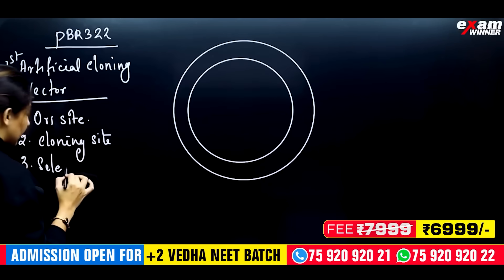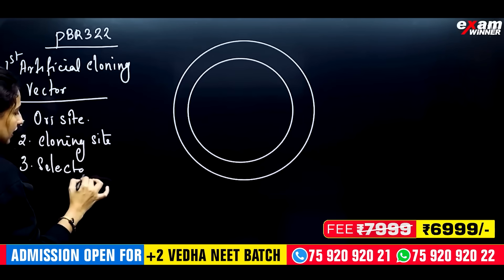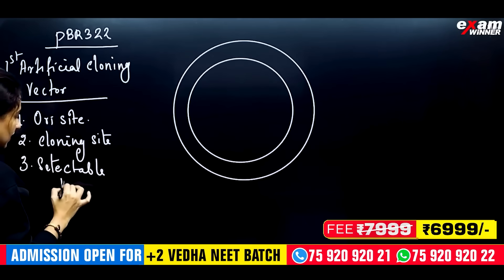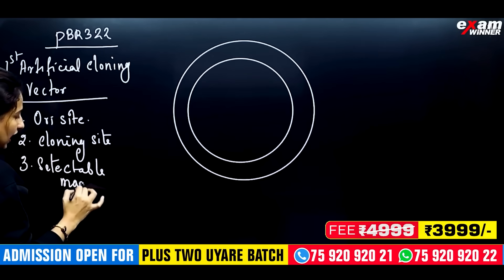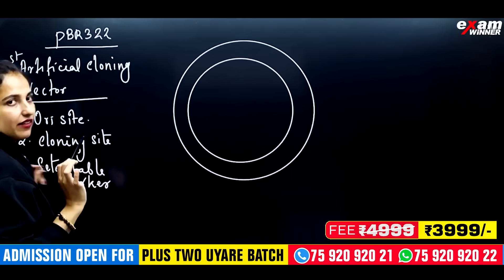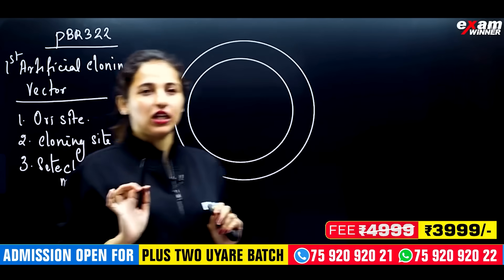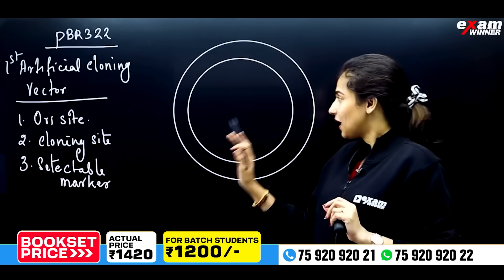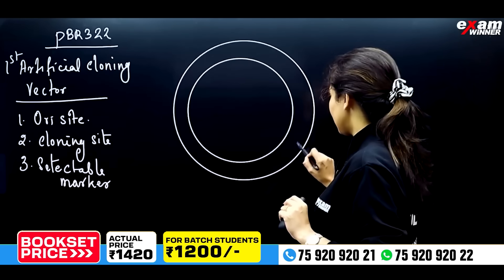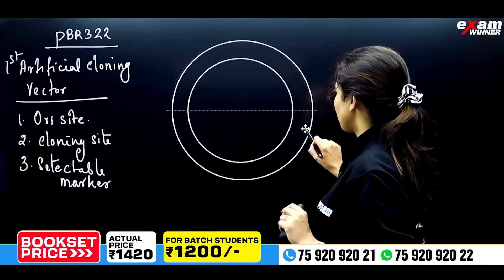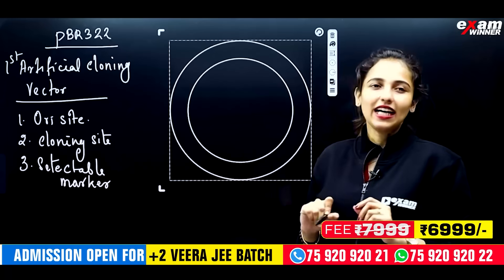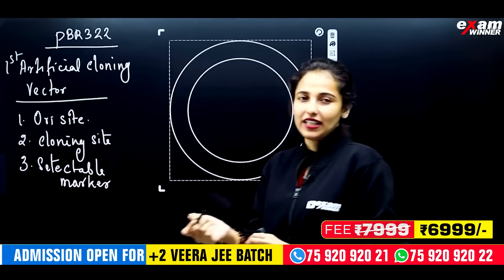This is a question — what requirements does an ideal cloning vector have? We have a cloning vector. This is basically it. If we have a responsibility, we have a cloning vector.